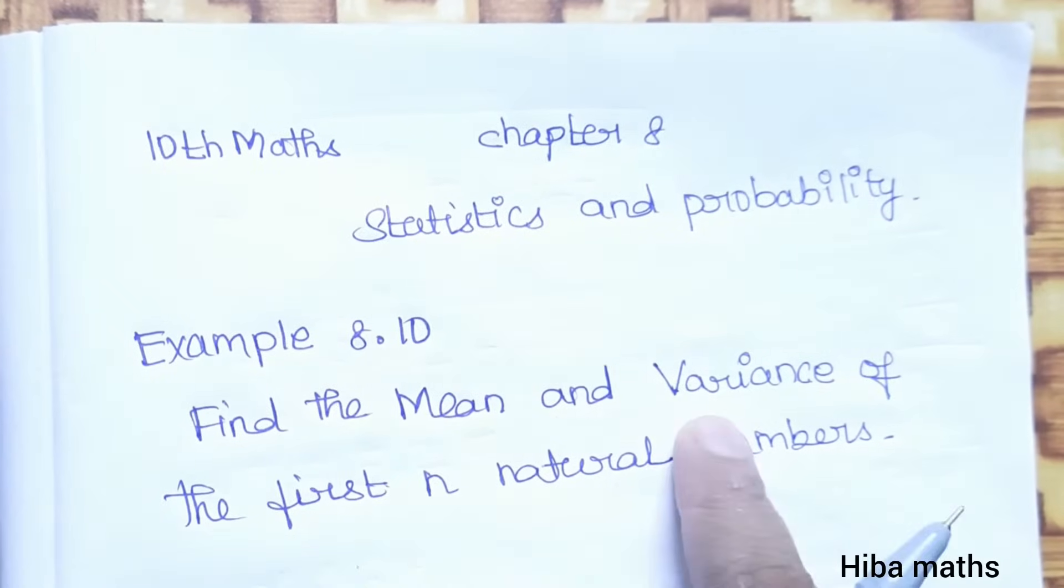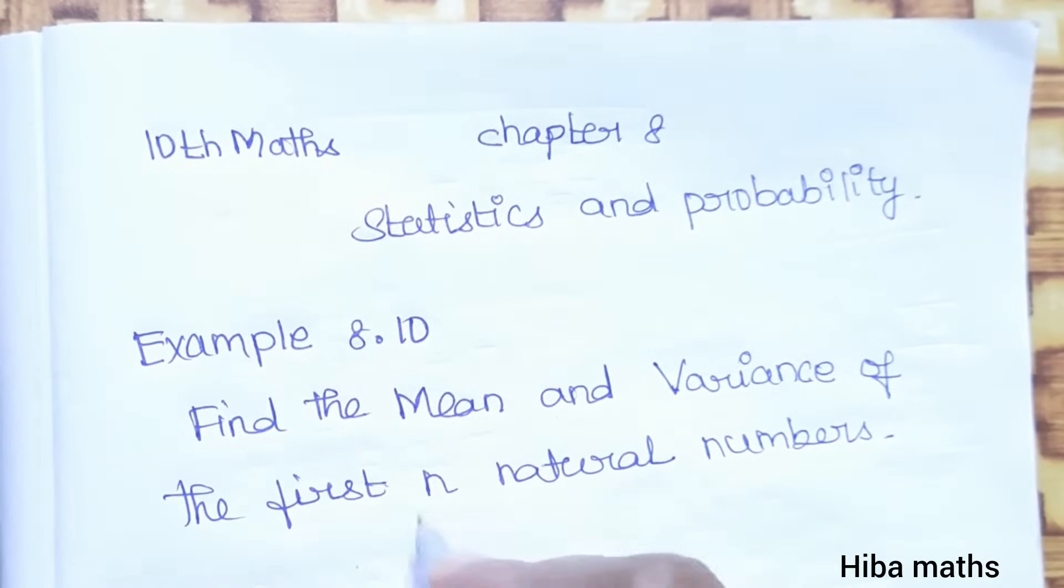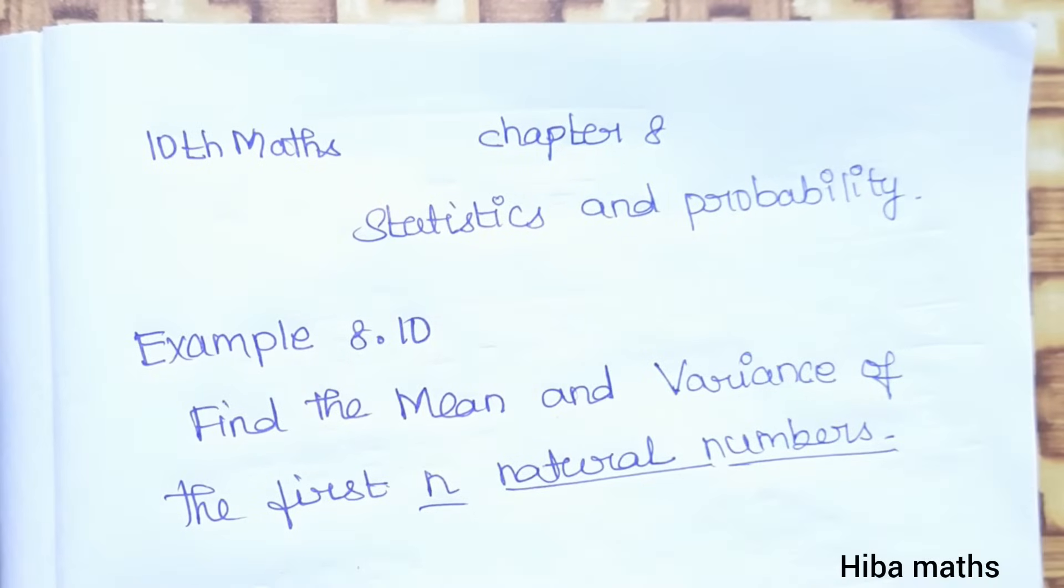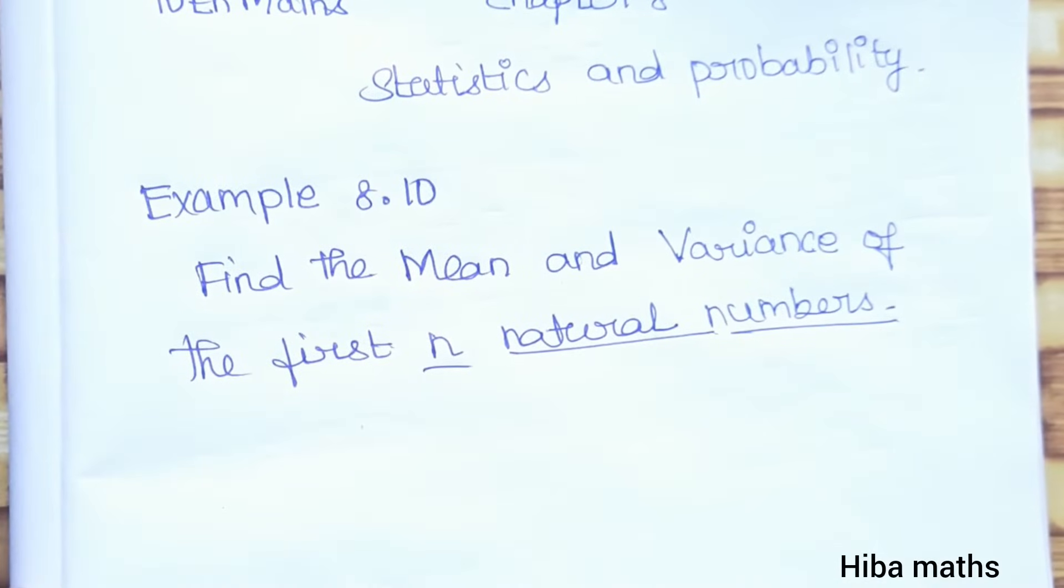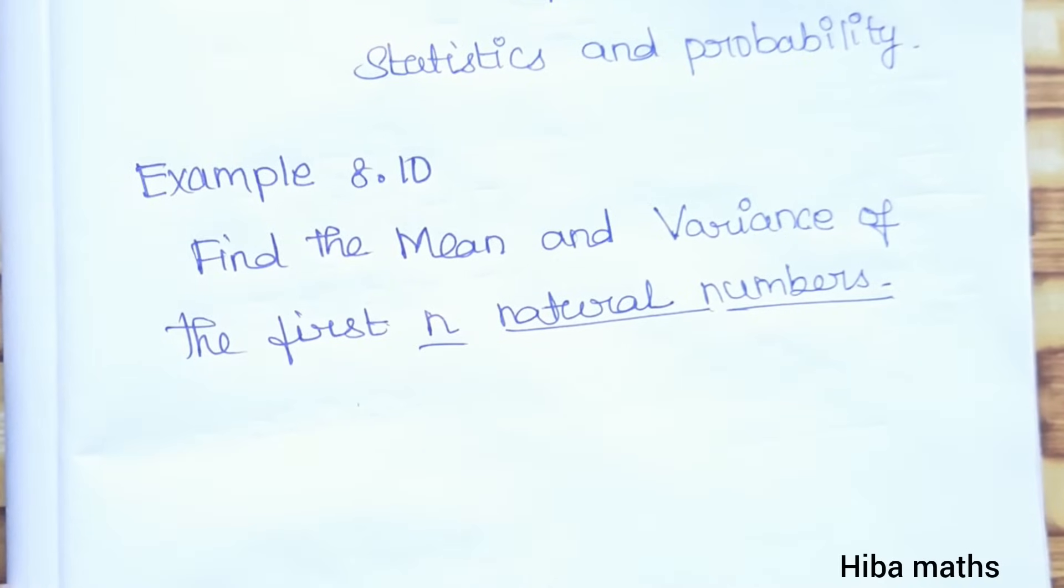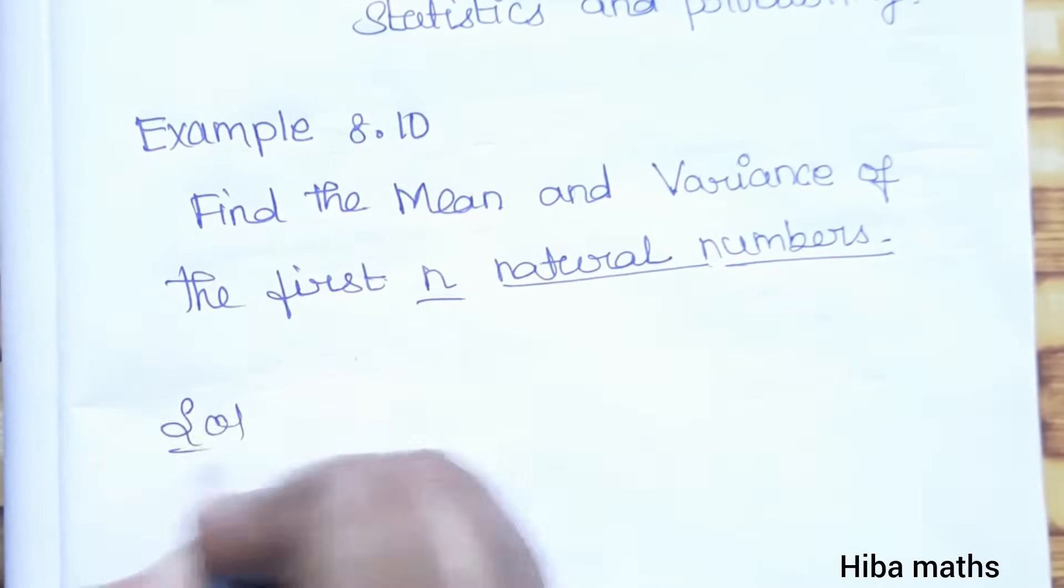Find the mean and variance of the first n natural numbers. So we call the values first n natural numbers. We call the mean and variance. We call the first mean.